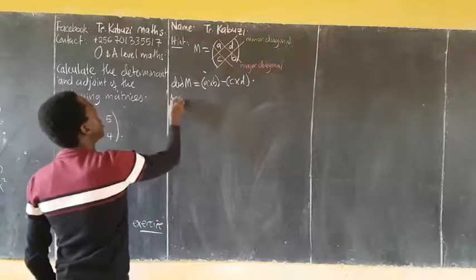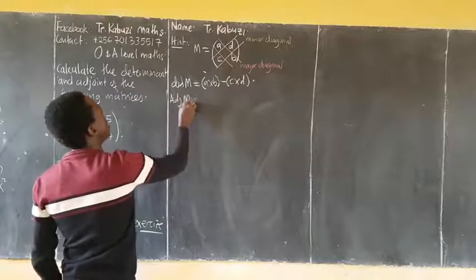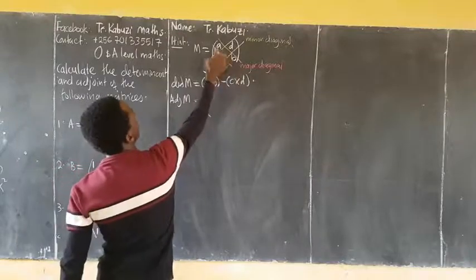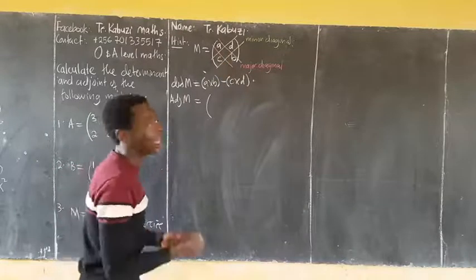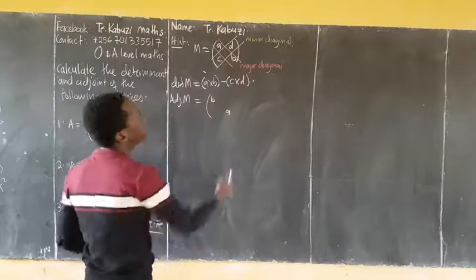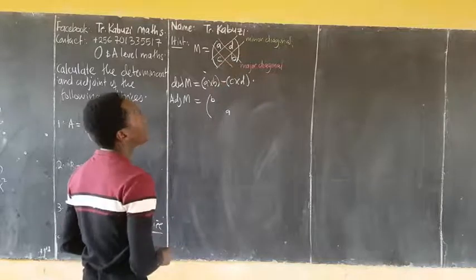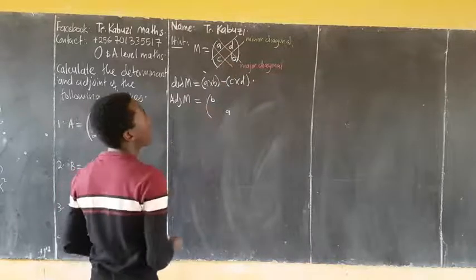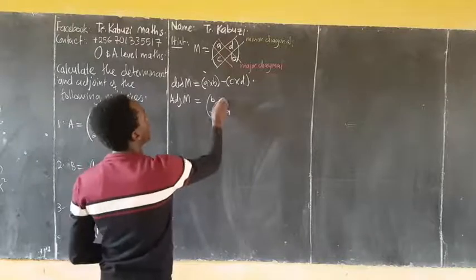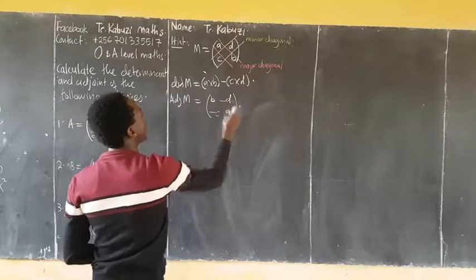Then the adjoint of M is given by, we just interchange elements in the major diagonal, so we get D, A. Then we change the signs of the elements in the minor diagonal. From the negative B that becomes positive, and then C becomes negative. So that's the adjoint.